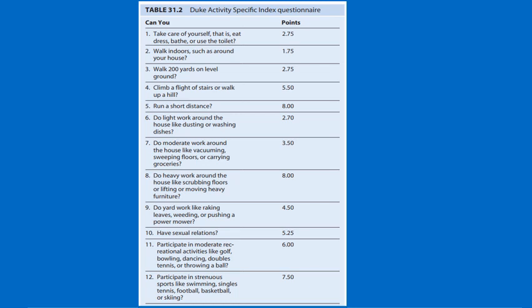In the Duke Activity Specific Index questionnaire, points are given according to different types of activity. We ask whether the patient can take care of himself, walk indoors, walk 200 yards on level ground, climb a flight of stairs or walk uphill, run for a short distance, do light or heavy work, have sexual relations, or participate in moderate recreational activity like golf. Based on these activities, points are added up and the metabolic equivalent is calculated.